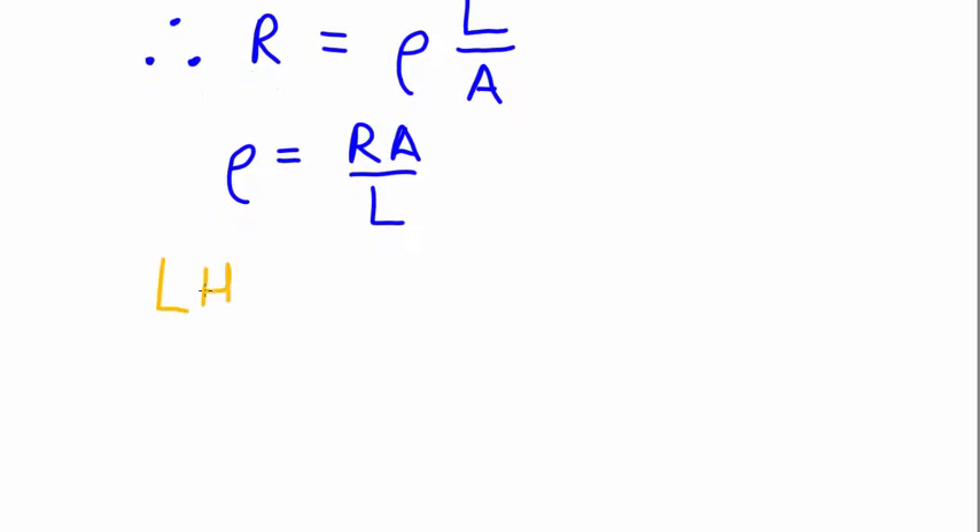So we can figure out the units of resistivity using this equation. First let's rearrange. We know that the units on both sides of the equation must be the same. So what are the units on the left hand side? We don't know.